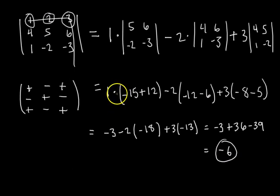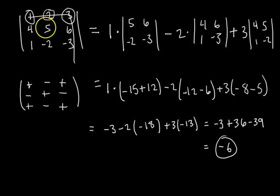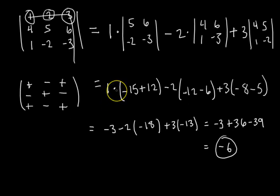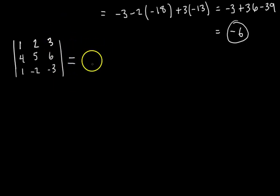Now I want to cofactor expand along a different row or column just to prove that it works the same and you'll get the same answer, negative 6. We'll also get more practice figuring out which terms are positive or negative. Let me recopy this matrix and then we'll cofactor expand along the third column — because it doesn't matter which row or column you pick.